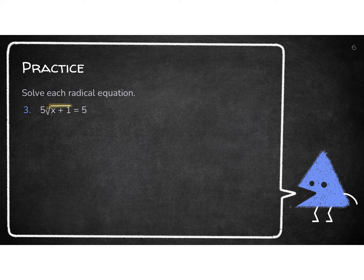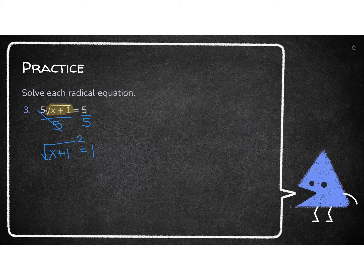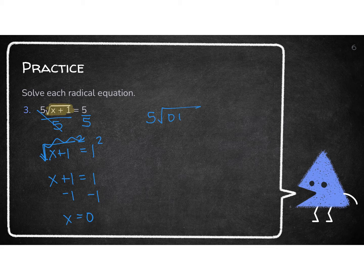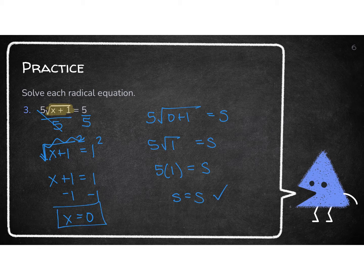Let's look at this one. Highlight everything underneath the radical. I've got to divide by 5 first to get rid of what's not highlighted. I'm left with the square root of x plus 1 equals 1. Since everything highlighted is alone, I square both sides to get x plus 1 equals 1 squared, which is 1. Subtracting 1, x equals 0. Let's double check: plug in 0 plus 1 — square root of 1 is 1, and 5 times 1 equals 5. That's a true statement, so that's my answer.